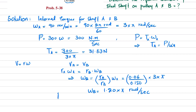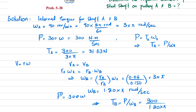Since the same power of 300 watts is transmitted, torque_b equals power divided by omega_b, which is 300 divided by 1.20π. This gives torque_b equal to 79.58 newton-meters.